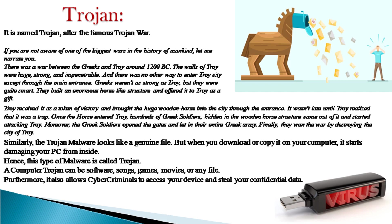It is named Trojan after the famous Trojan War. There was a war between the Greeks and Troy around 1200 BC. The walls of Troy were huge, strong, and impenetrable, and there was no other way to enter Troy City except through the main entrance. The Greeks weren't as strong as Troy, but they were quite smart. They built an enormous horse-like structure and offered it to Troy as a gift. Troy received it as a token of victory and brought the huge wooden horse into the city. Once the horse entered Troy, hundreds of Greek soldiers hidden inside came out and started attacking. The Greek soldiers also opened the gates and let in their entire army. Finally, they won the war by destroying the city of Troy.